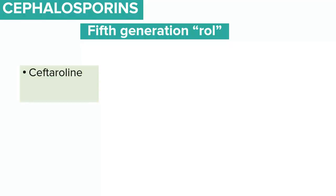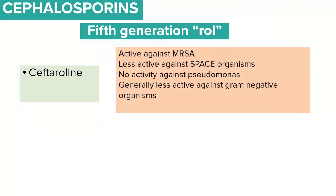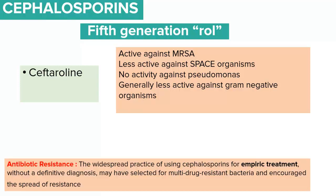In the fifth generation, the naming contains the phrase 'rol'. An example is ceftaroline, which is active against methicillin-resistant Staphylococcus aureus (MRSA) but is less active against Pseudomonas compared to fourth-generation cephalosporins. Ceftaroline doesn't have activity against the SPACE organisms and is less active against gram-negative organisms. The widespread use of cephalosporins in empiric treatment has contributed to the development of multi-drug-resistant bacteria.